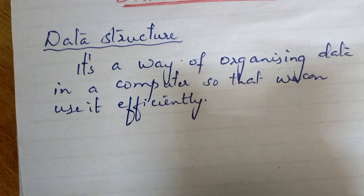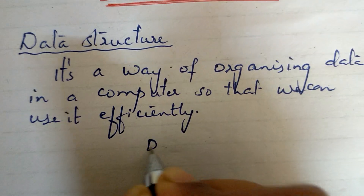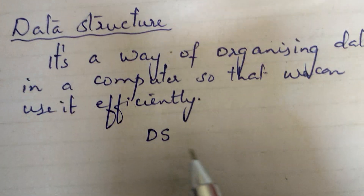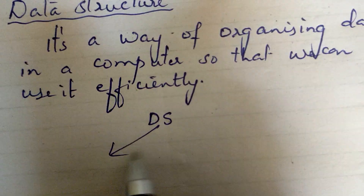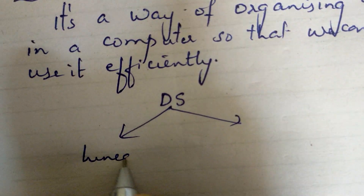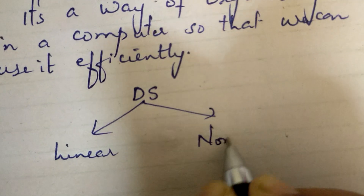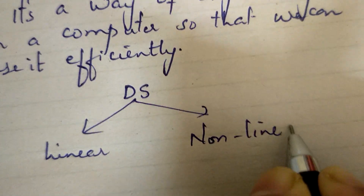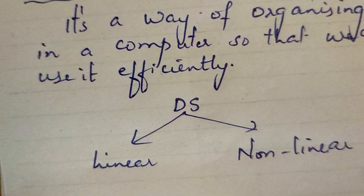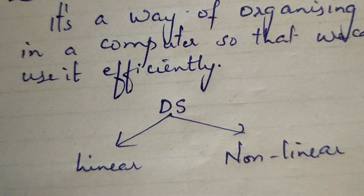There are different types of data structures. I will use DSI to denote it — full data structure. The data structure is the main structure. One type is linear data structure, and the next is non-linear. From the name itself, we can understand: linear data structure means we arrange data in a linear fashion.